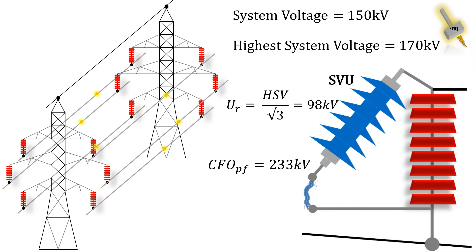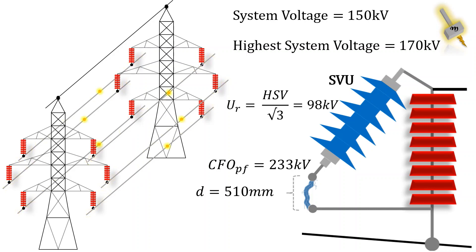The critical flashover voltage at power frequency level will be 233 KV. For that, the minimum spark gap distance will be 510 mm.